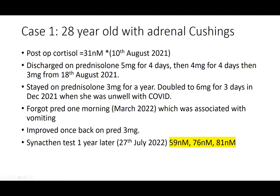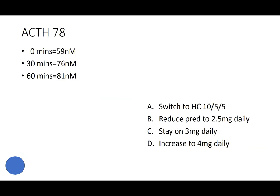She then comes to clinic and has a synacthen test: baseline 59, 30-minute 76, 60-minute 81 nanomoles per litre. The baseline ACTH is 78 — normal range 10 to 30 — so a nicely generous ACTH. A poll is launched to ask what management to choose.